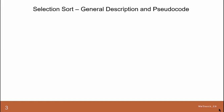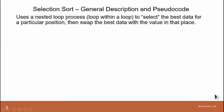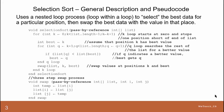Now it's time to take a look at the pseudocode for the selection sort. Essentially, it uses a nested loop process, a loop within a loop, to select the best value for the position. And here is that code.